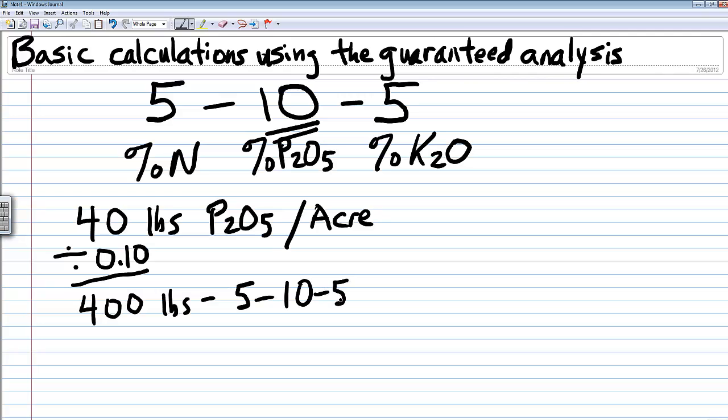Intuitively, that is possible. If we want to check ourselves to make sure this is really the right number, if we take 400 pounds of that fertilizer times its phosphate analysis (10%, 0.10), that equals 40 pounds of P2O5. That is the amount we would need to apply 40 pounds of phosphate to the acre.